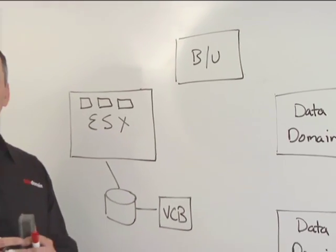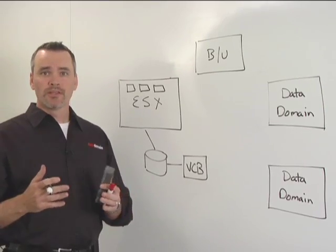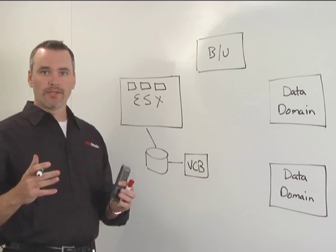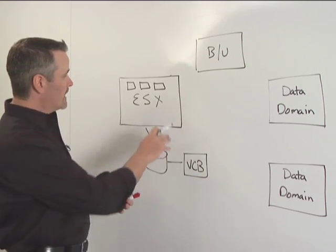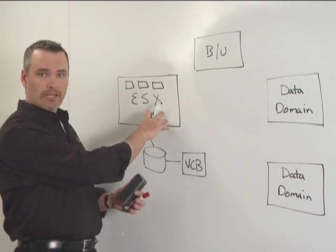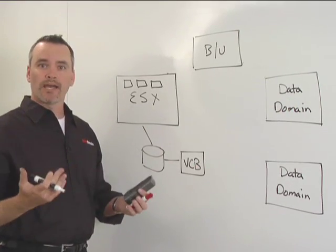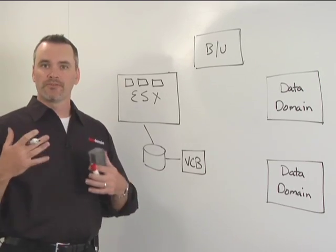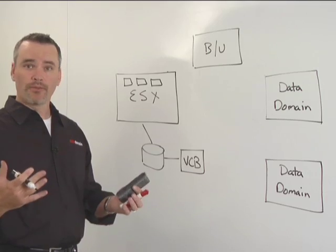How do customers typically deploy Data Domain to protect a VMware environment? The answer is there's really no one right or correct answer for every environment. To really simplify it, you basically want to take copies of your virtual machine images running on ESX and store them on a Data Domain system, which is a backup-to-disk target. But there are different scenarios and different reasons why you'd choose one method over the other, and I'll talk about three of them.